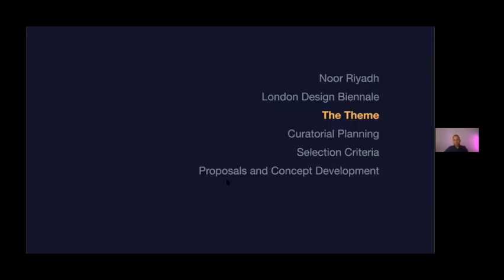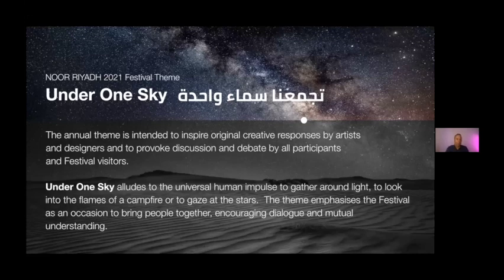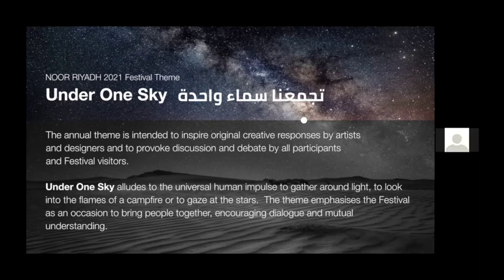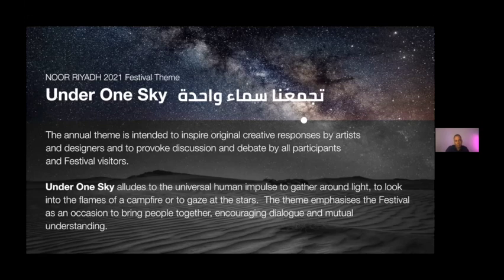Coming on to the theme — I'll talk first about the theme for Noriad, the festival we ran this year. We started to look at the theme back in 2019 when I joined the team. A lot of arts festivals don't necessarily have a theme; Biennales do, but festivals don't. We were setting a marker by saying Noriad is going to have a theme, because we're really a contemporary art festival — not just a light festival, as you find in a number of parts of the world. We workshopped these ideas, and the theme I finally came up with was Under One Sky.